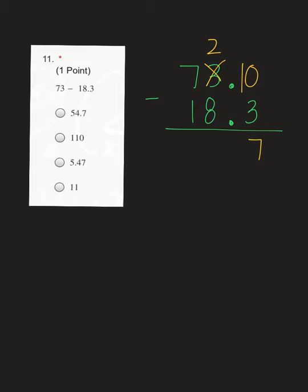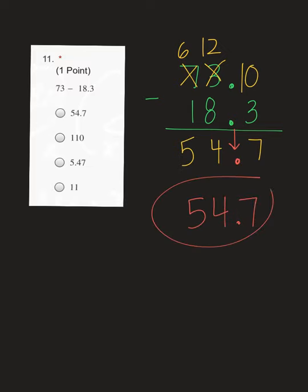2 minus 8 — I can't do it, so I need to borrow from my 7, making it a 6, so that becomes a 12. 12 minus 8 is 4. 6 minus 1 is 5. The final step is to drop your decimal straight down. So your final answer should be 54.7, which would have been answer option A on your form.